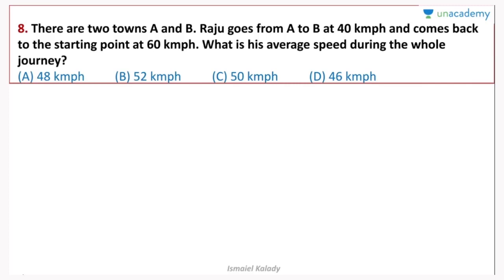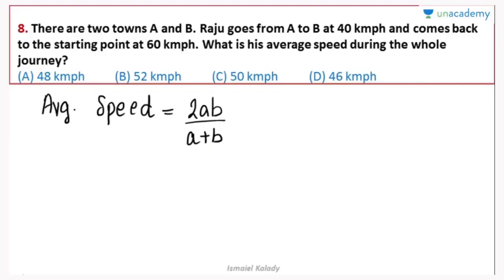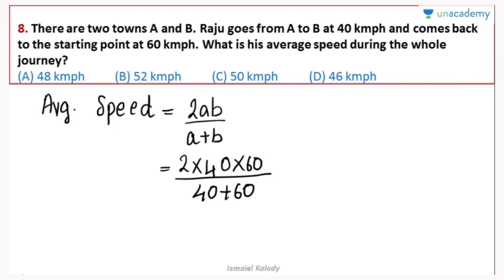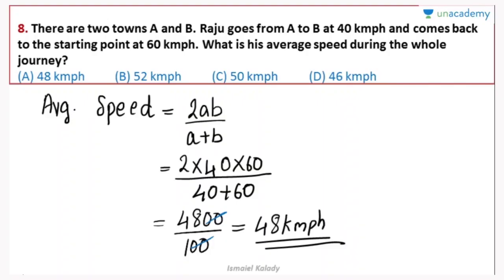Let's take a look at the next question on average speed. There are two towns A and B. Raju goes from A to B at 40 kmph and comes back to the starting point at 60 kmph. What is his average speed for the whole journey? Using the equation 2ab divided by a plus b: a is 40, b is 60. That's 2 into 40 into 60 divided by 40 plus 60, which is 4800 divided by 100, giving 48 kmph. Option A, 48 kmph, is the right answer.